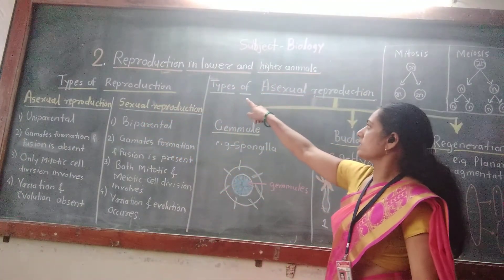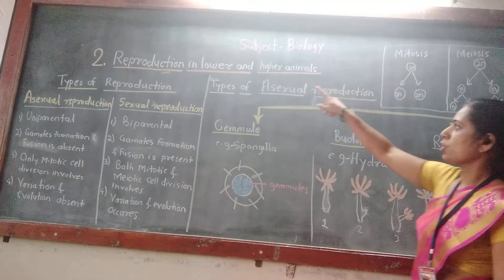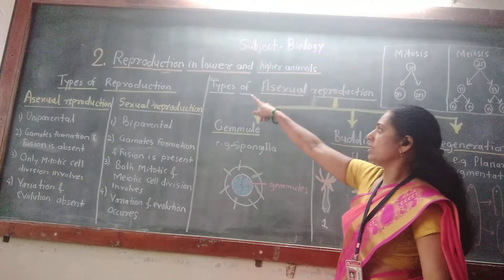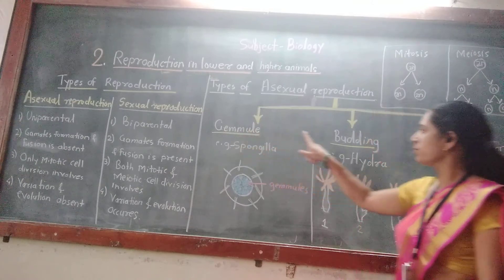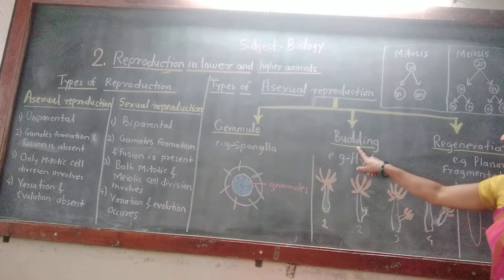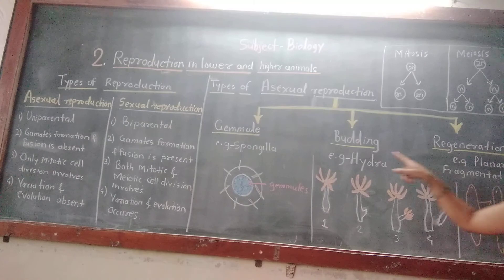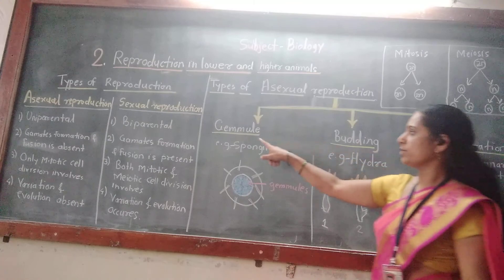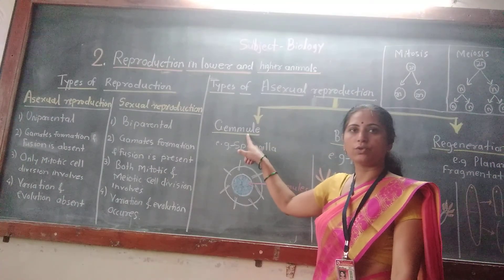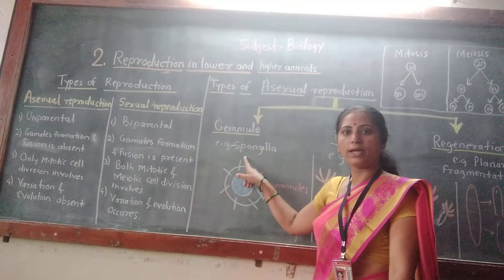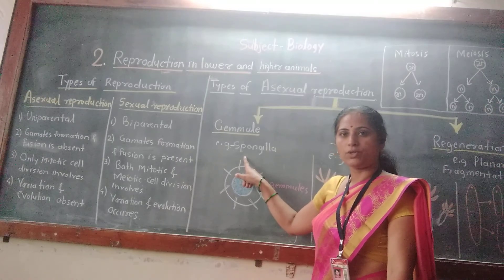Which are the various types of asexual reproduction in lower animals? Asexual reproduction occurs by gemmule formation, budding, or regeneration. What is a gemmule? A gemmule is an internal bud which is only found in phylum Porifera. One example is Spongilla.